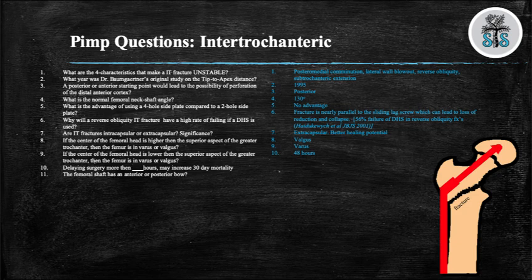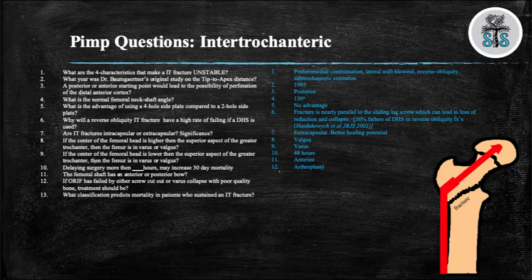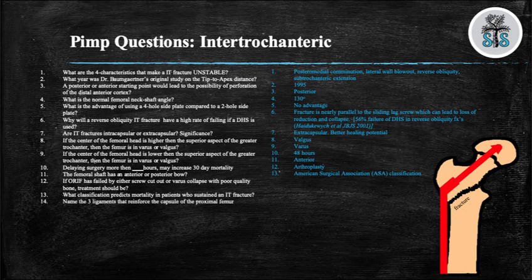Question 11: The femoral shaft has an anterior or posterior bow? Anterior. Question 12: If ORIF has failed by either screw cutout or varus collapse with poor quality bone, treatment should be? Arthroplasty. Question 13: What classification predicts mortality in patients who sustain an IT fracture? The American Surgical Association classification, which is used by anesthesia. Question 14: Name the three ligaments that reinforce the capsule of the proximal femur. The iliofemoral, the pubofemoral, and the ischiofemoral.